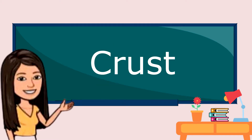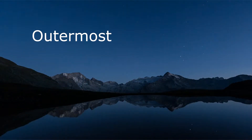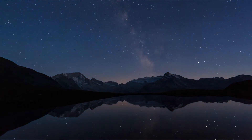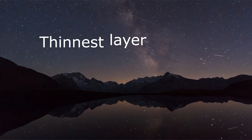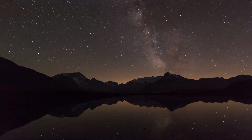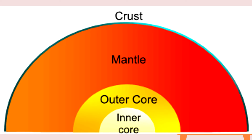Let us start with the crust. The crust is the outermost layer of Earth. It is also the thinnest layer of the Earth. Continental crust and oceanic crust are the two kinds of crust. The crust is made up of solid rocks and minerals.